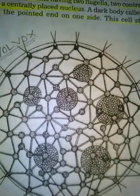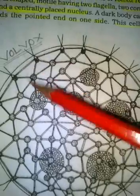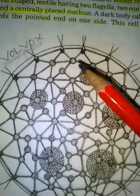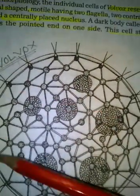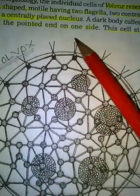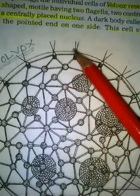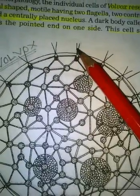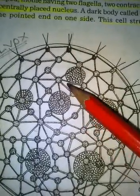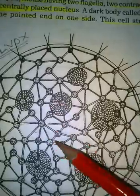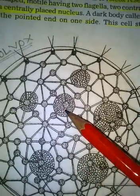Twenty species of Volvox have been found. It looks like a minute green ball with spiny heads. It contains a daughter colony.